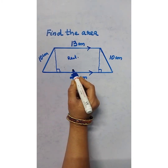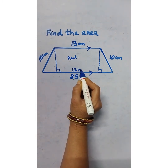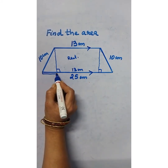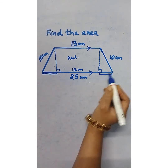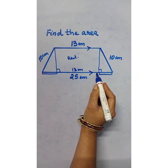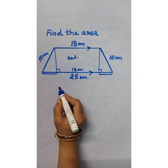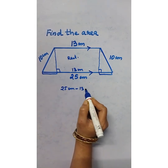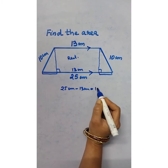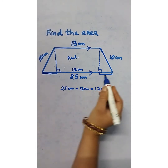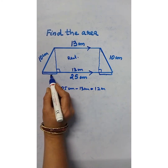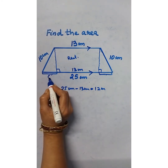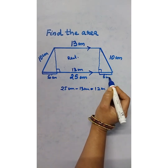Here it is 13 centimeters. When we draw the perpendicular lines, we get 13 centimeters in the middle, and these two side parts we have to find. Since the top is 13 cm and the bottom is 25 cm, the two side parts together equal 25 minus 13 = 12 centimeters. Divided by 2, each part is 6 centimeters.